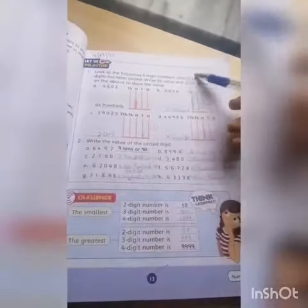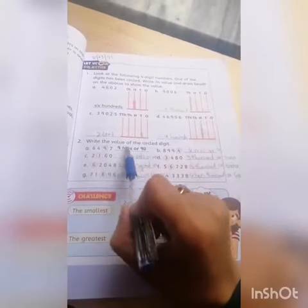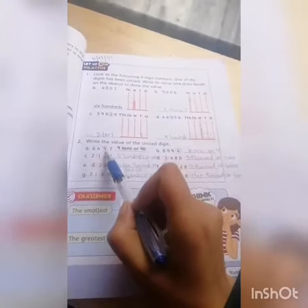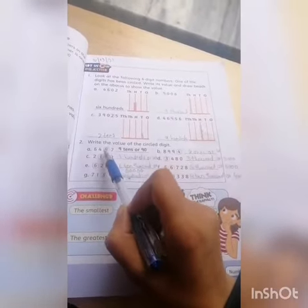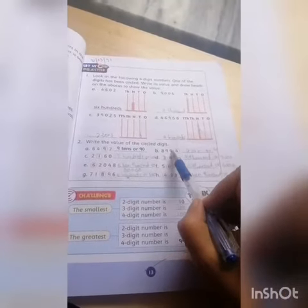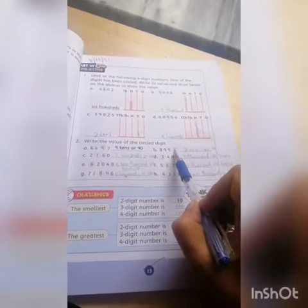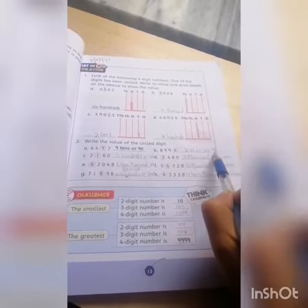Question number two is: write the value of the circled digits. Here are the circled digits and we write the values. First we count unit tens. Nine tens are ninety. We write like this. Here the first one is ones. Four ones are four.